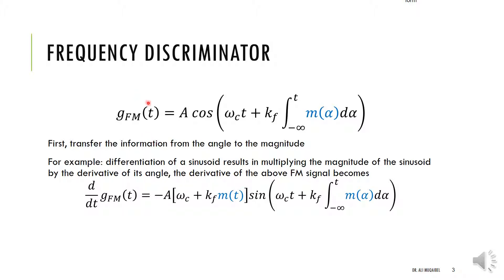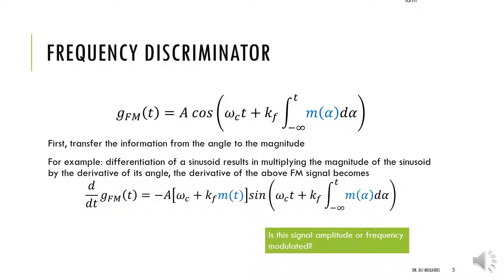Signal differentiation will be one example of frequency discrimination. We start with the general form of the FM signal, where the information is contained in the angle. The question is how to get this information into the amplitude, because if we can do so, we can use normal amplitude demodulation. If we apply a differentiator, differentiating the angle gives us the derivative of the angle outside, and then we have sine instead of cosine. The resulting signal after differentiation is both frequency modulated and amplitude modulated.